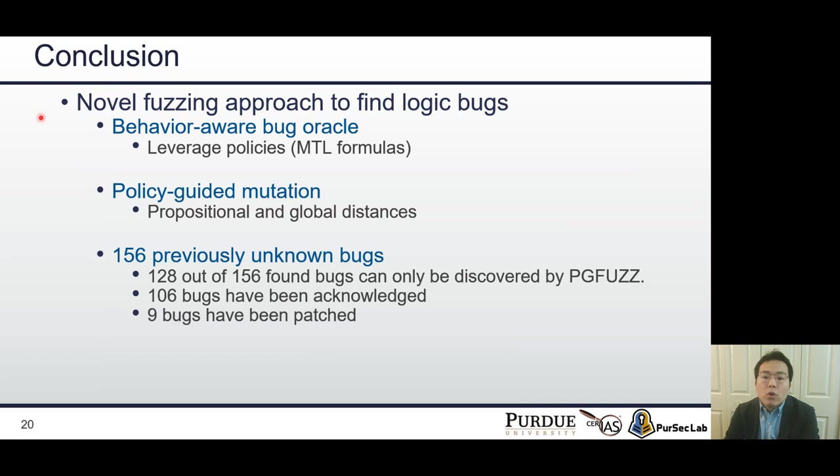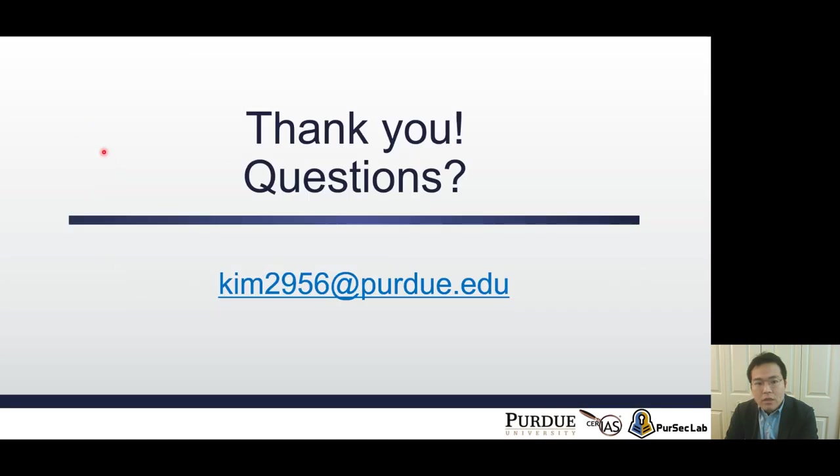We introduce a novel fuzzing method, PGFUZZ, to discover logic bugs in robotic vehicles. First, in order to detect bugs, PGFUZZ leverages policies denoted by MTL formulas. Second, PGFUZZ uses propositional and global distance to efficiently mutate input. Third, PGFUZZ found a total of 156 previously unknown bugs. After we reported the found bug cases, developers acknowledged a total of 106 bug cases. Also, developers already patched 9 bug cases. This is the end of my presentation. Please feel free to ask any questions. Thank you.